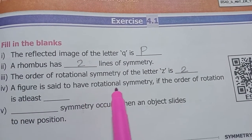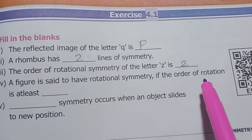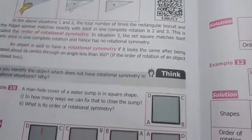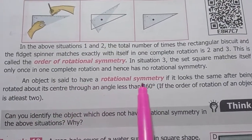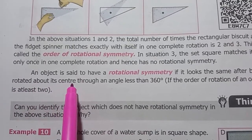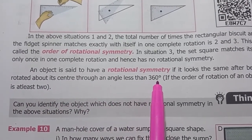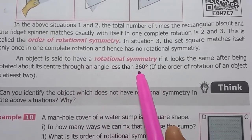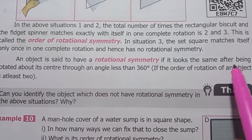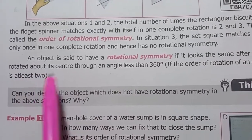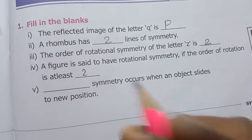Fourth one: a figure is said to have rotational symmetry if the order of rotation is at least two times. So the answer is two.